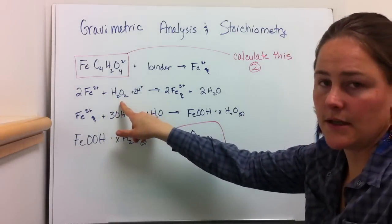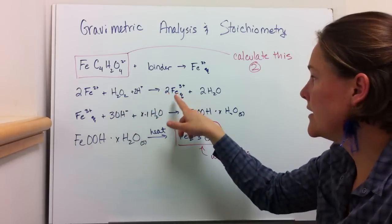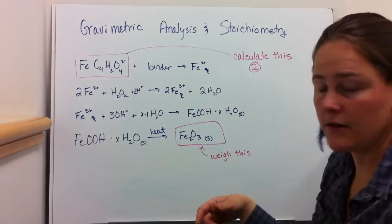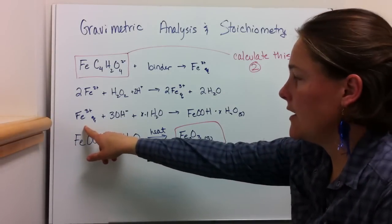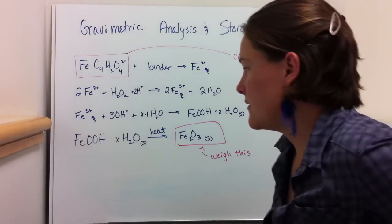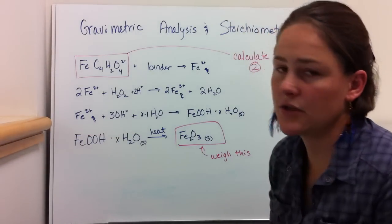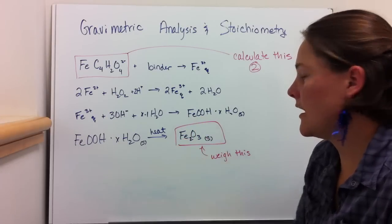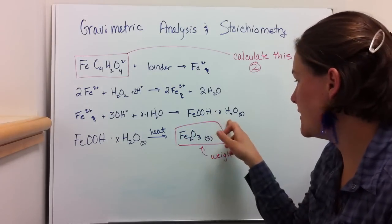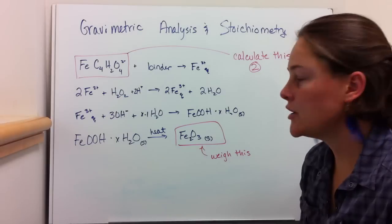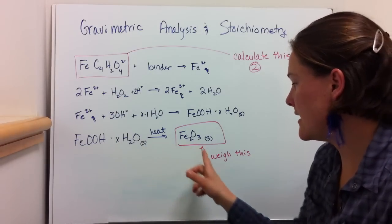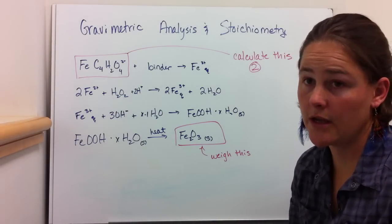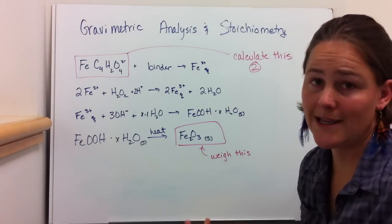Then you're going to oxidize it using hydrogen peroxide and acid, and end up with aqueous iron-3 — you just took away another electron. So then you have aqueous iron-3 plus a strong base, and you form an iron oxide called ferrihydrite (FeOH). Then you heat that, and it transforms into Fe₂O₃, which is a mineral called hematite.